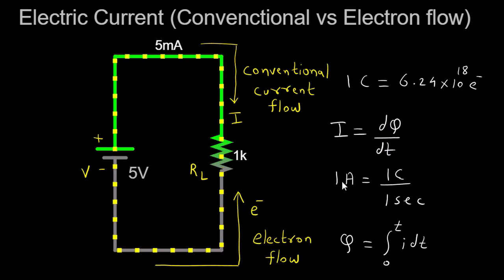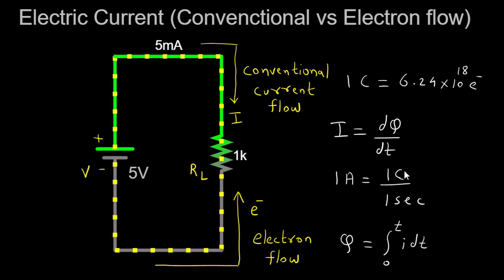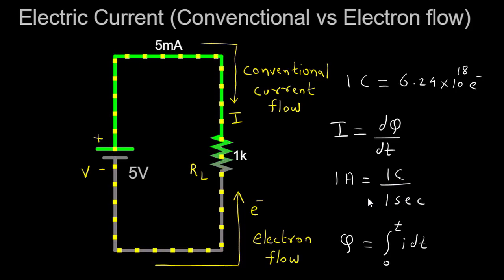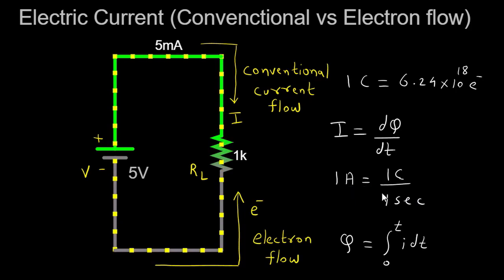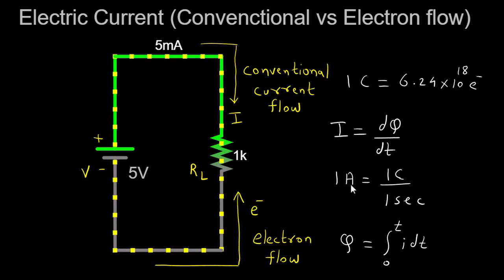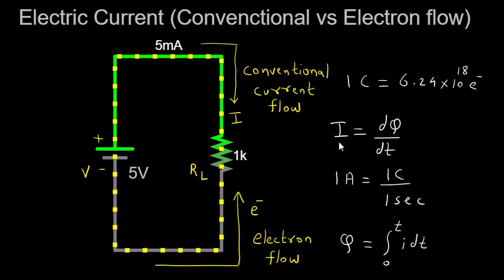One ampere is defined as one coulomb of charge flowing per second. In other words, if one coulomb of charge passes through a specific point in a circuit in one second, the current flowing through that point is one ampere. The ampere is a standard unit for measuring electric current and is widely used in electrical systems and devices.